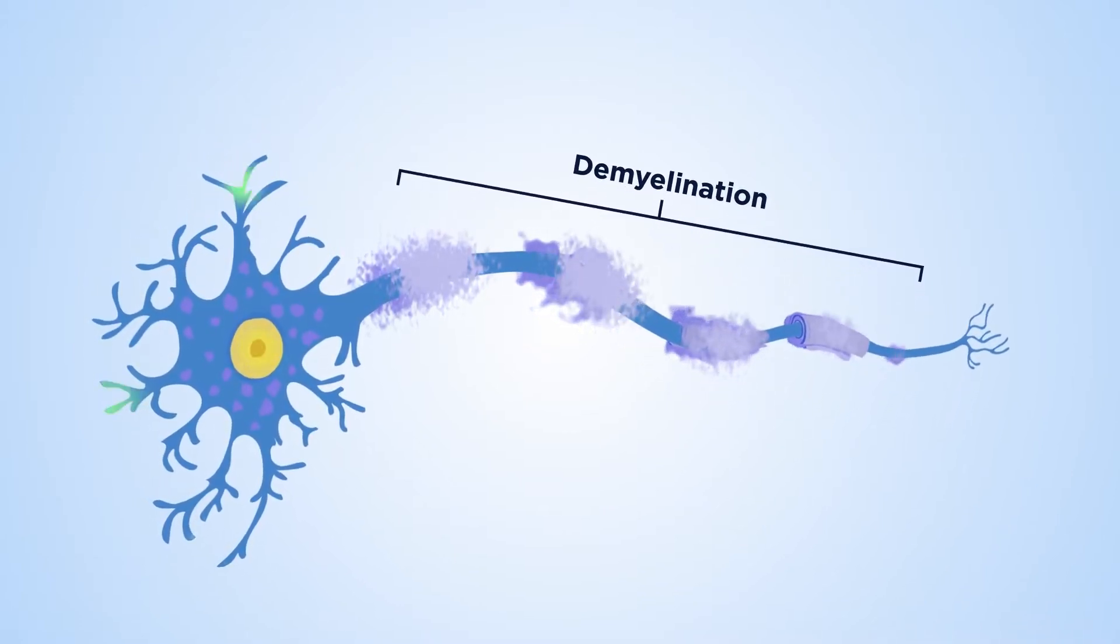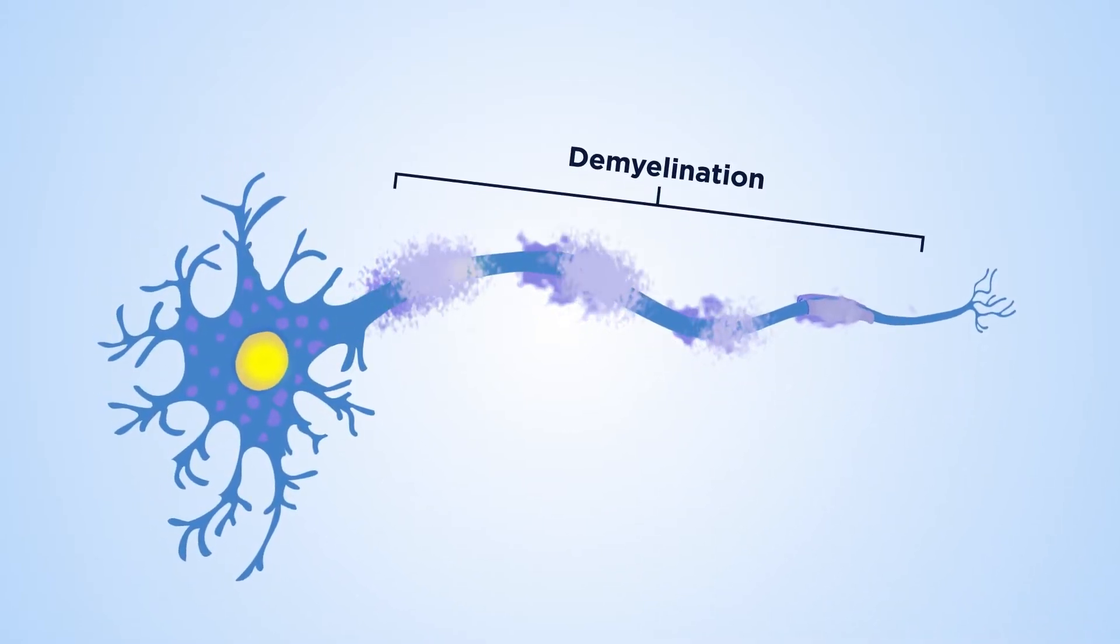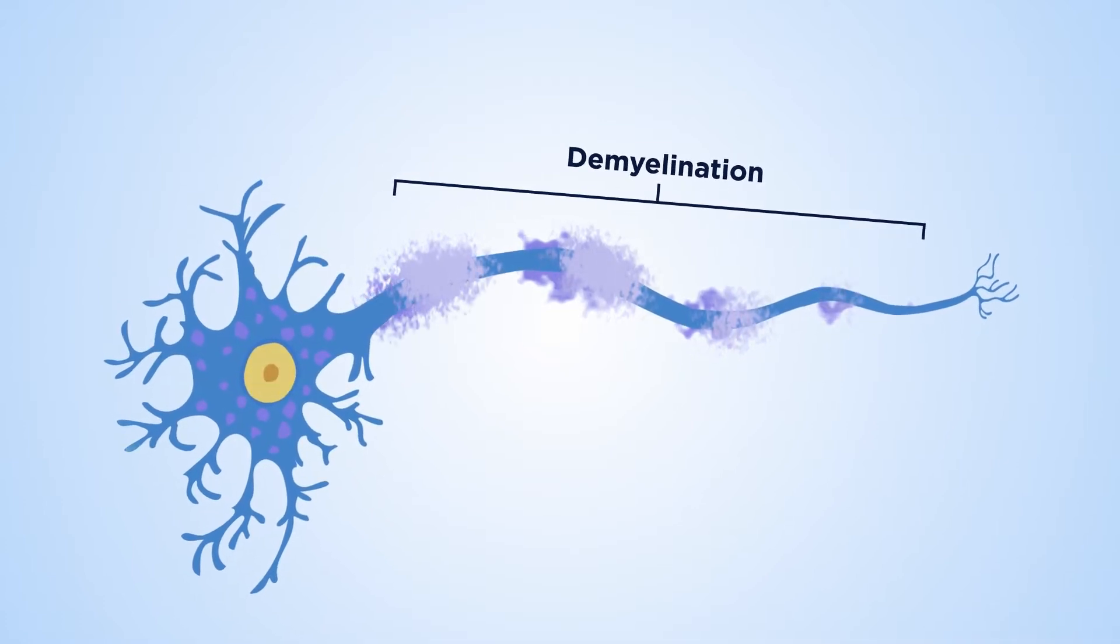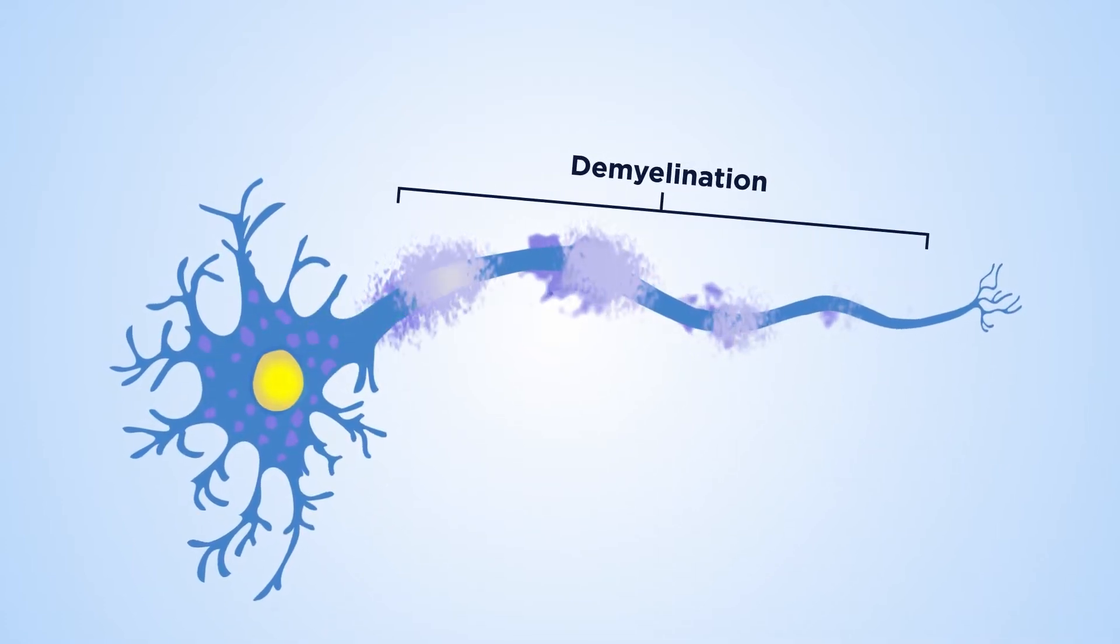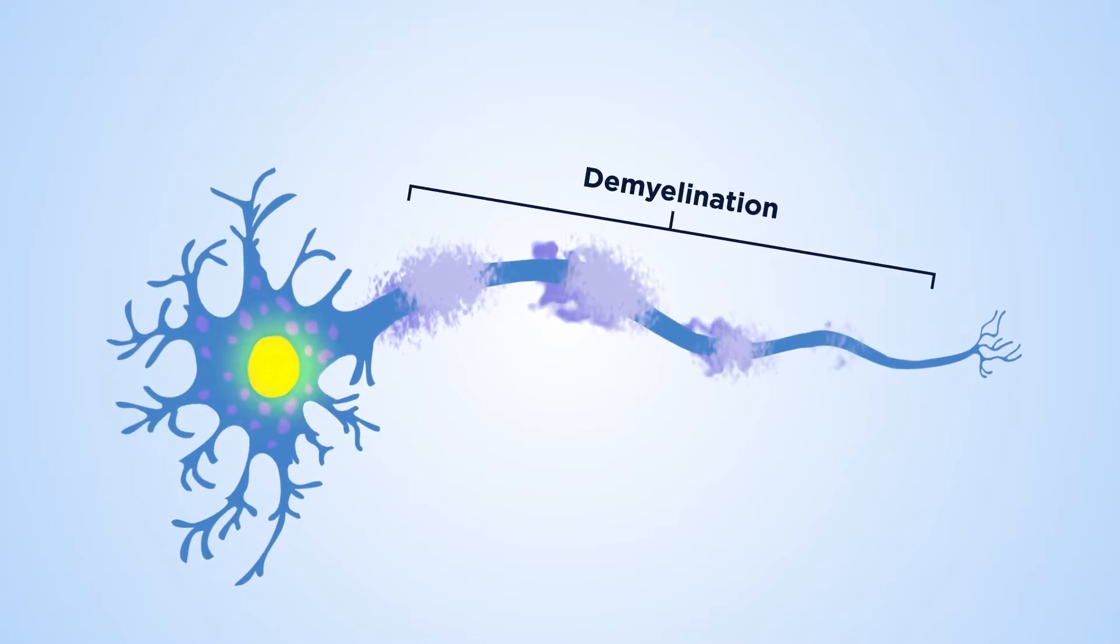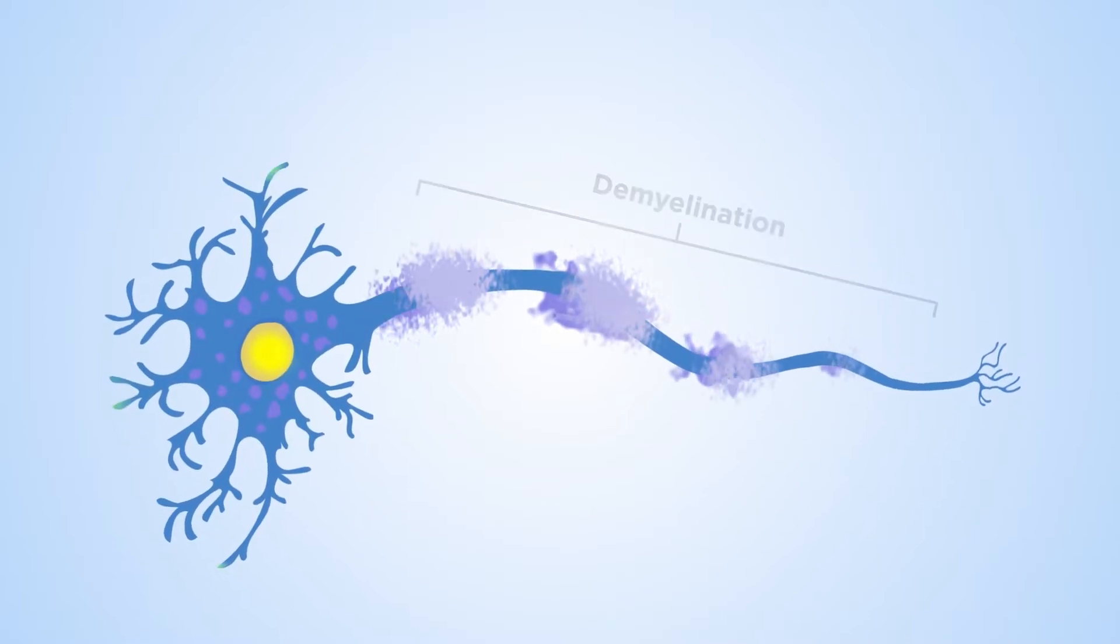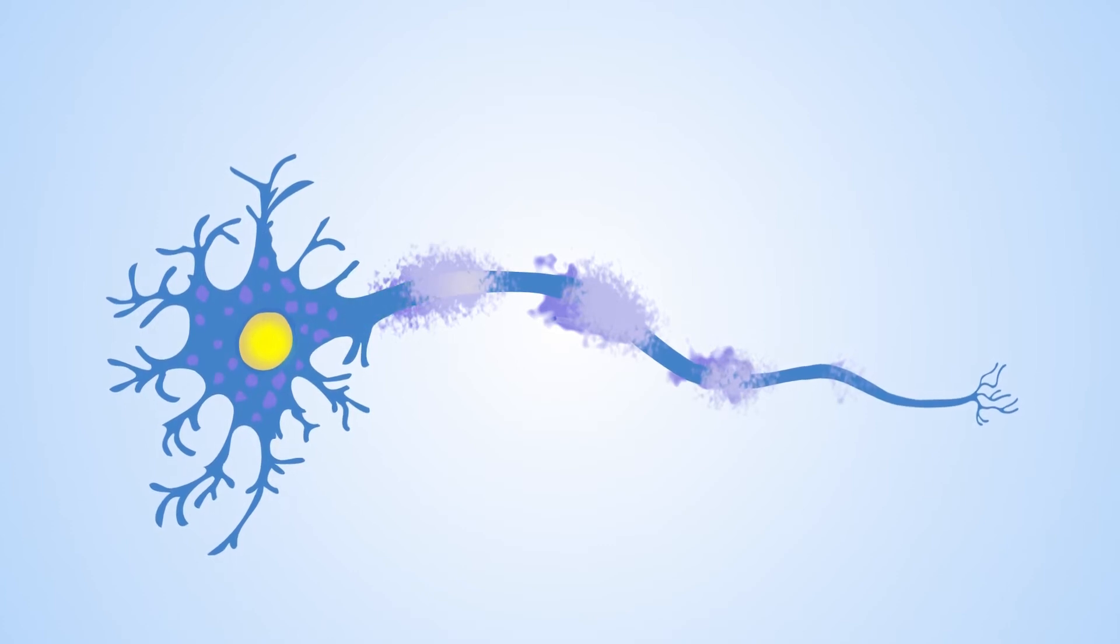The disruption to the central nervous system can cause impaired motor coordination, vision problems, and pain. Chronic demyelination can eventually lead to axonal or neuronal loss with little potential for repair. This can lead to permanent disability.